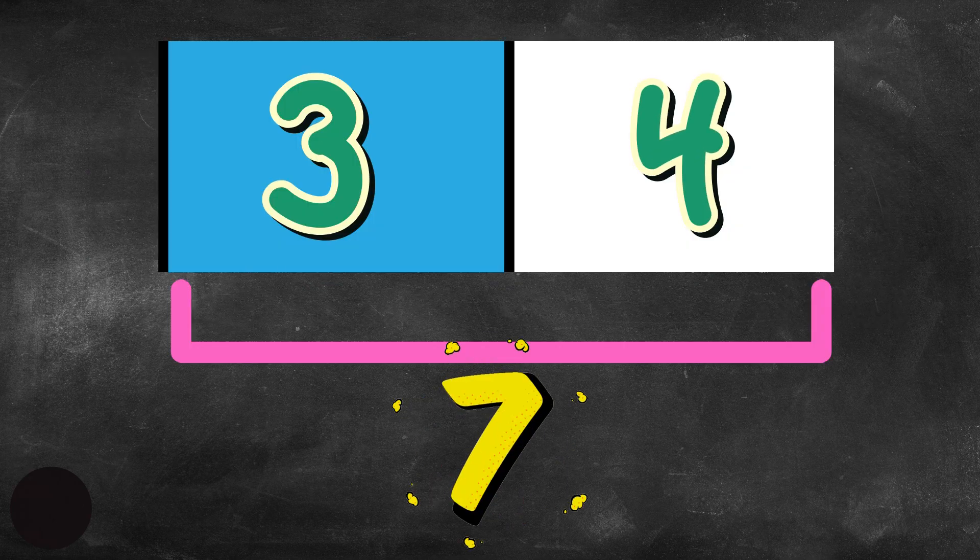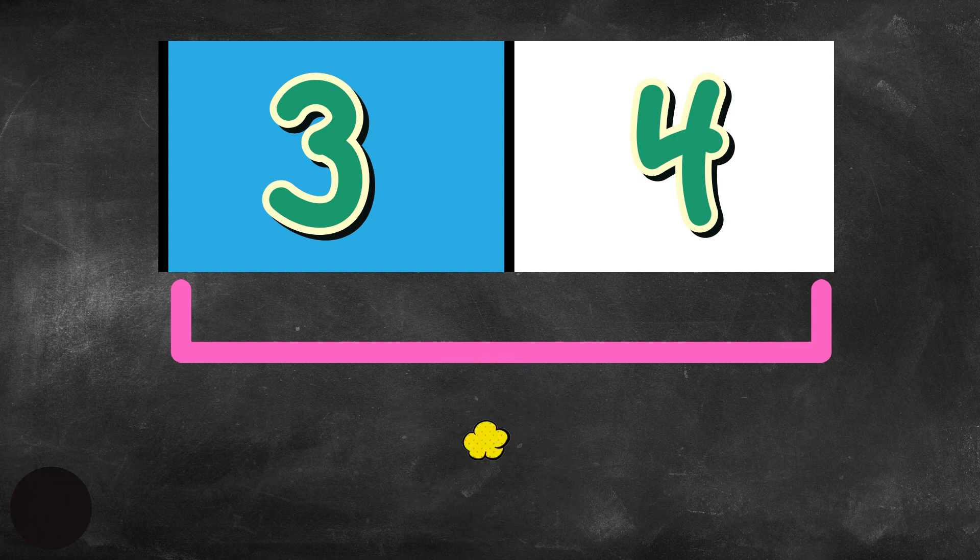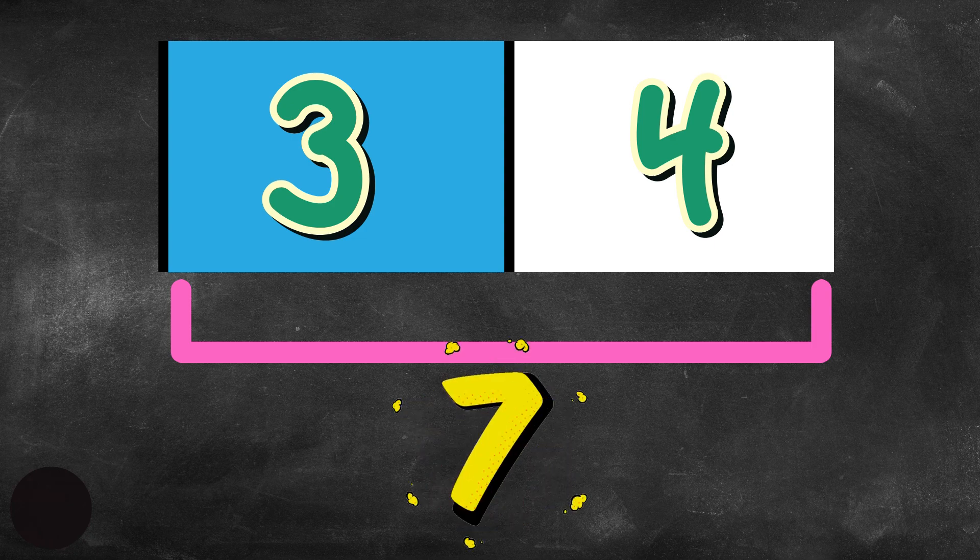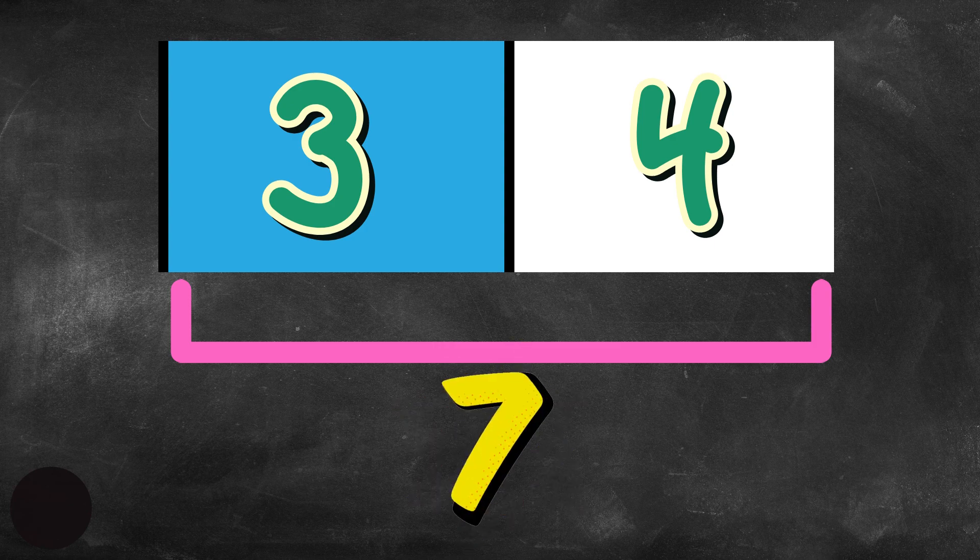That's right. Three plus four equals seven. Now I can put the seven under that bar line, the pink line, to show that the whole is seven. So one part is three. One part is four. Together, as a whole, they are seven. So Jim has seven apples in all.